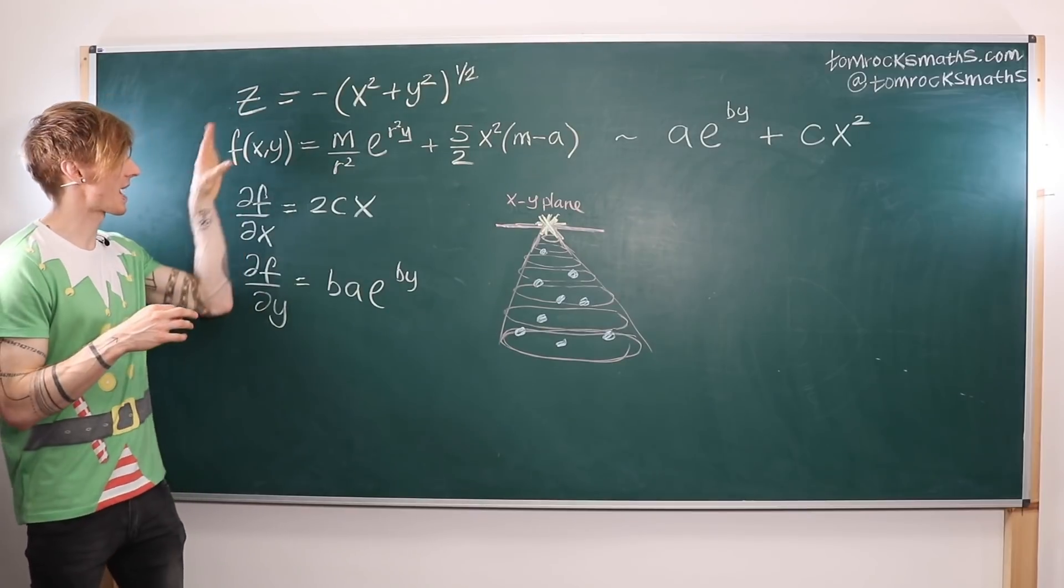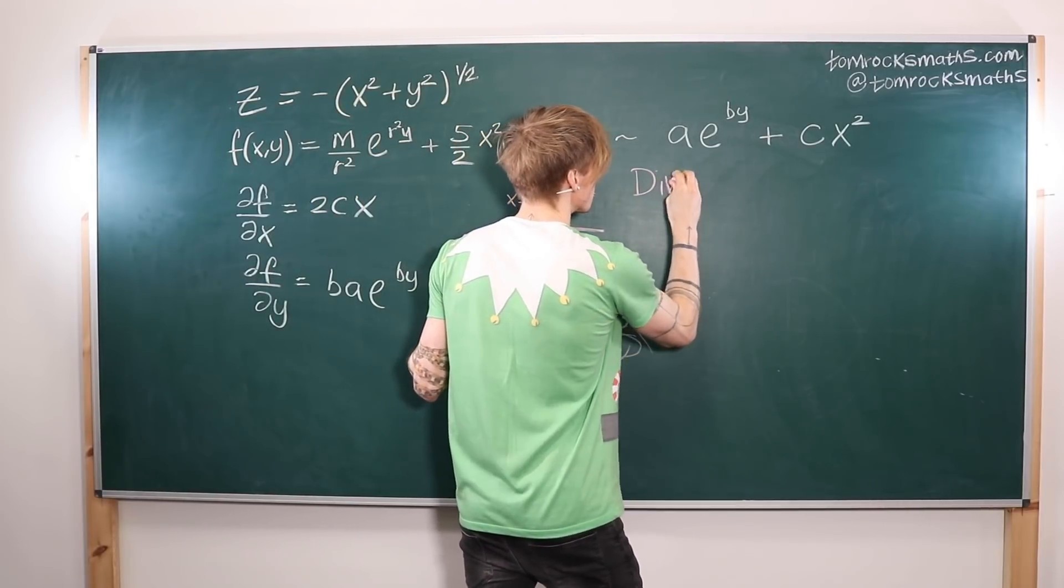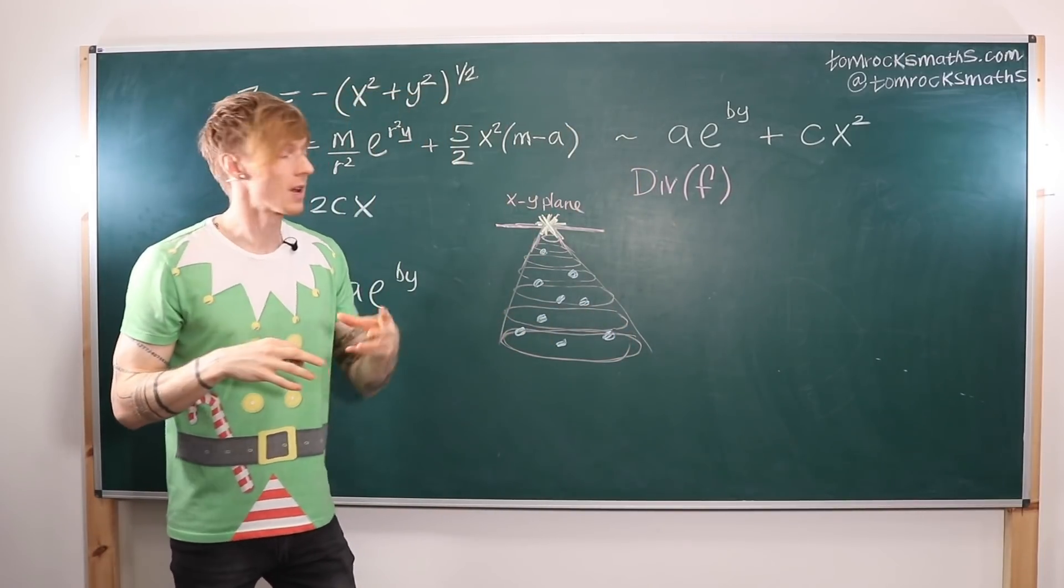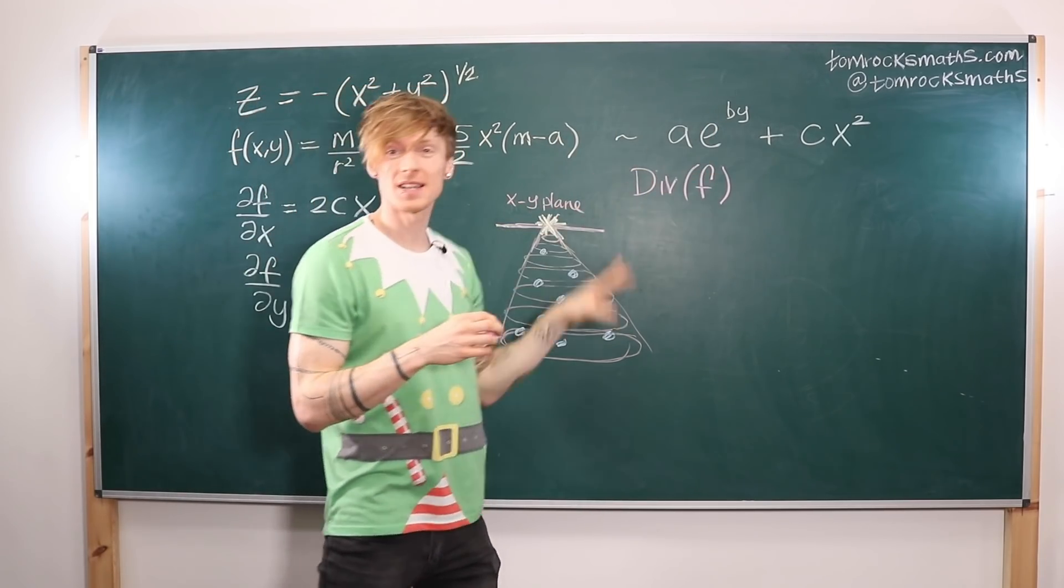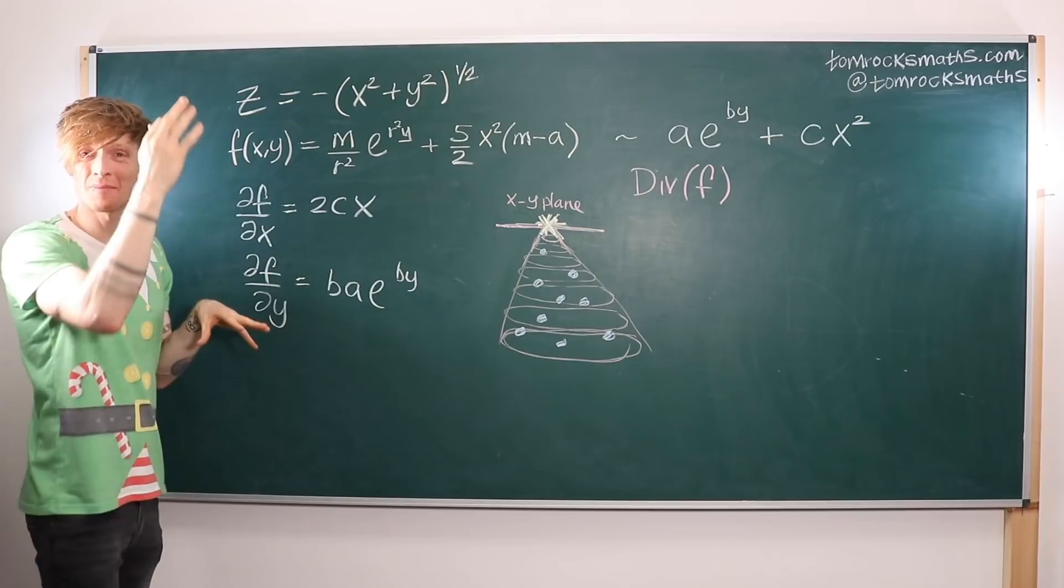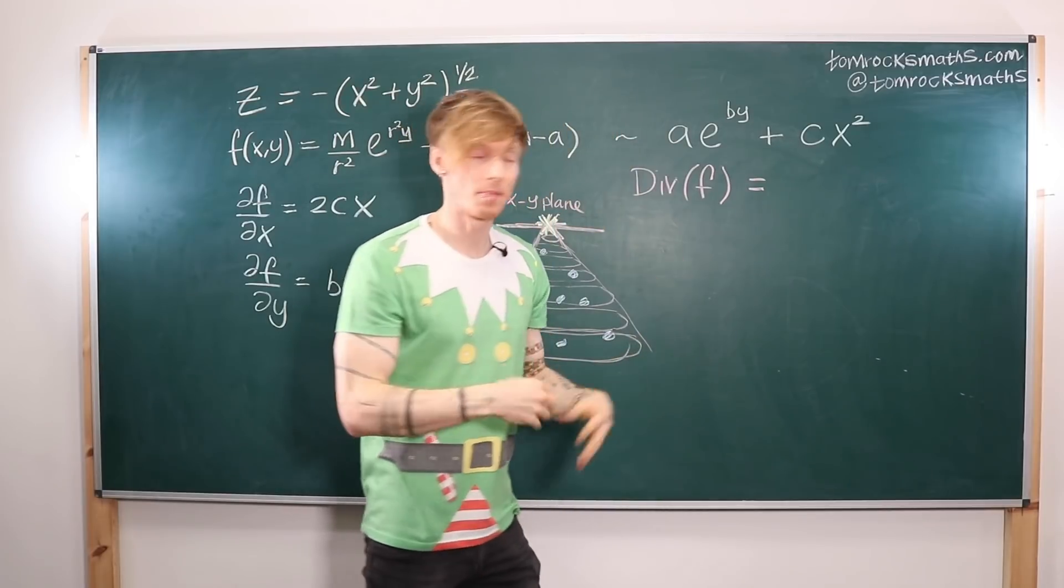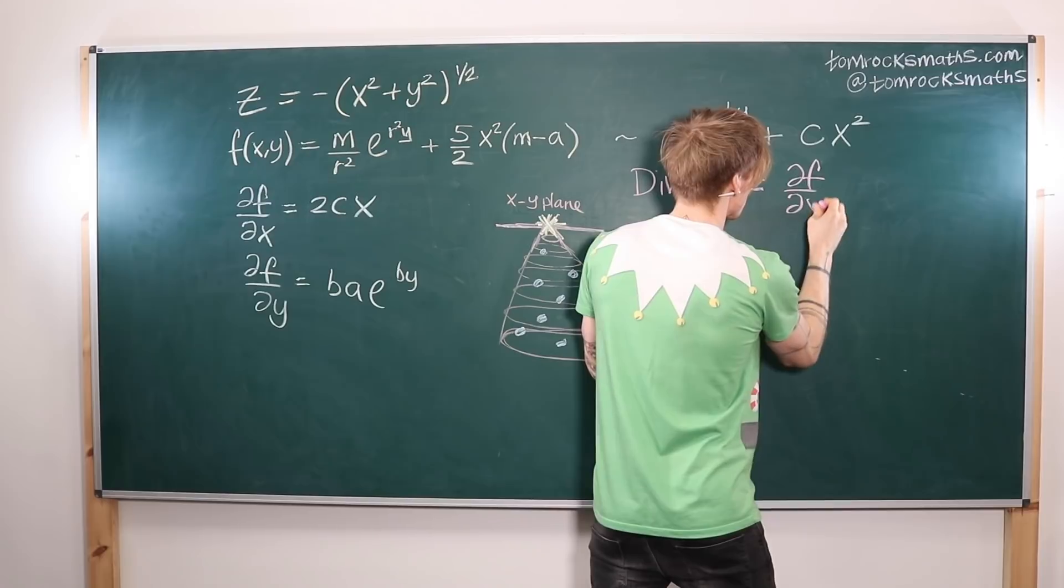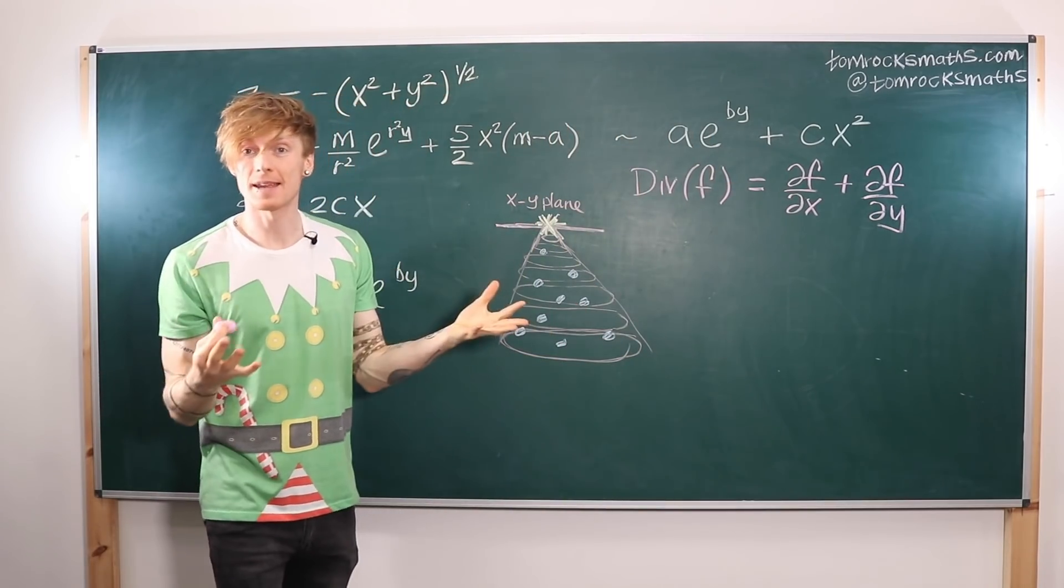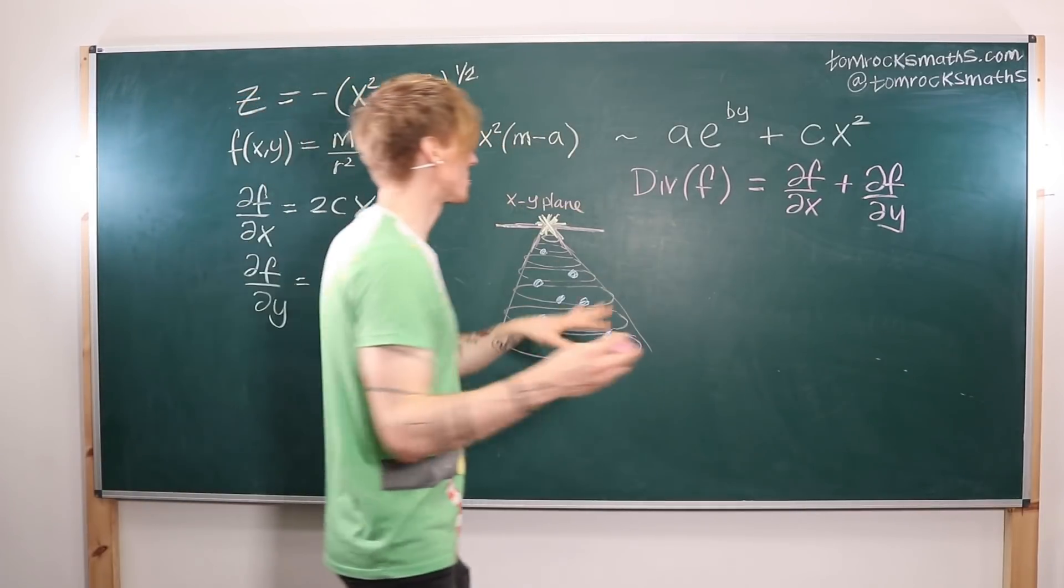I mentioned we want to calculate the divergence of f. The divergence of a function equals the sum of its partial derivatives. In three dimensions this would be ∂f/∂x + ∂f/∂y + ∂f/∂z. But since we're working in 2D with a function of x and y, the divergence here is ∂f/∂x + ∂f/∂y.